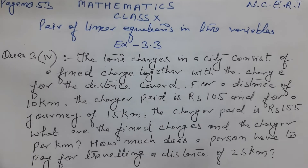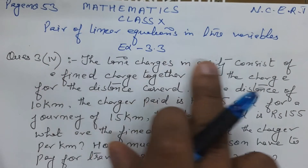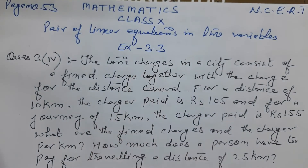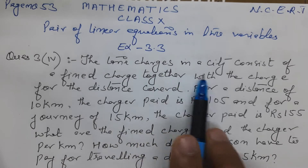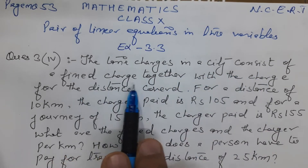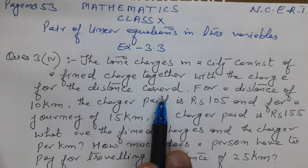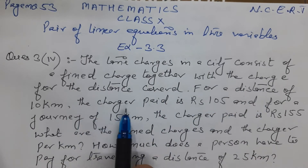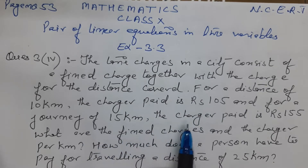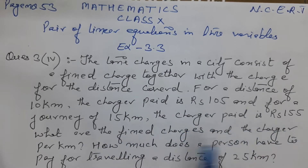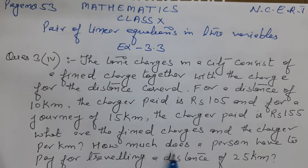Hello students, welcome to my YouTube channel. Mathematics class 10, pair of linear equations in two variables, exercise 3.3, question number 3, fourth part from the NCERT. The taxi charges in a city consist of a fixed charge together with the charge for the distance covered. For a distance of 10 km the charge paid is 105 rupees, and for a journey of 15 km the charge paid is 155 rupees. What are the fixed charges and the charge per km? How much does a person have to pay for traveling a distance of 25 km?